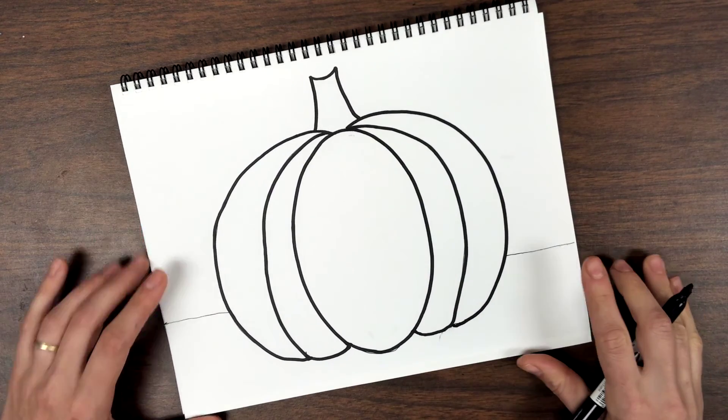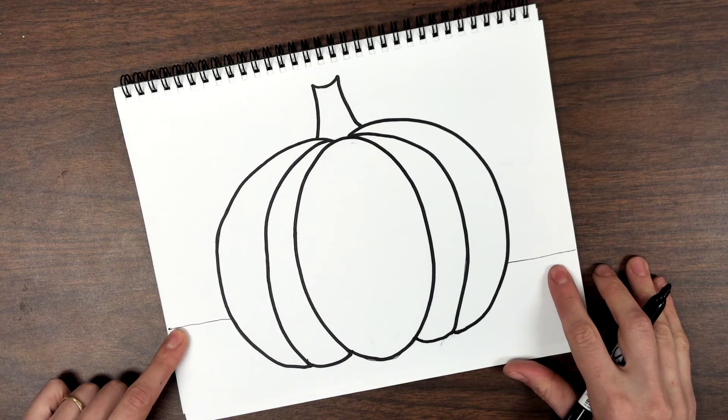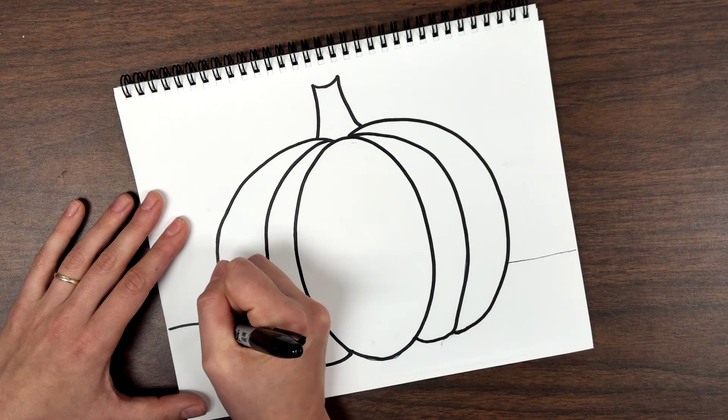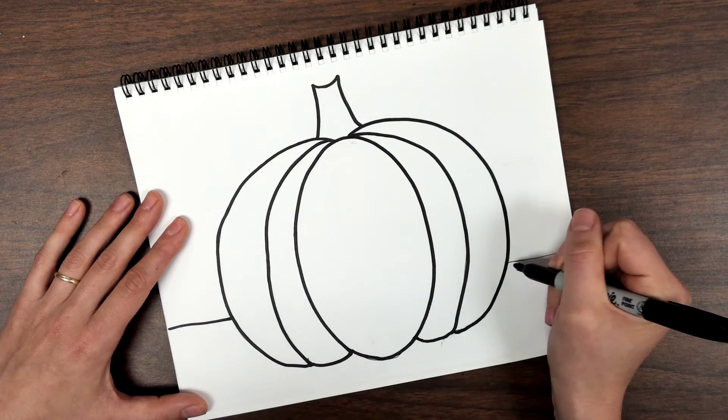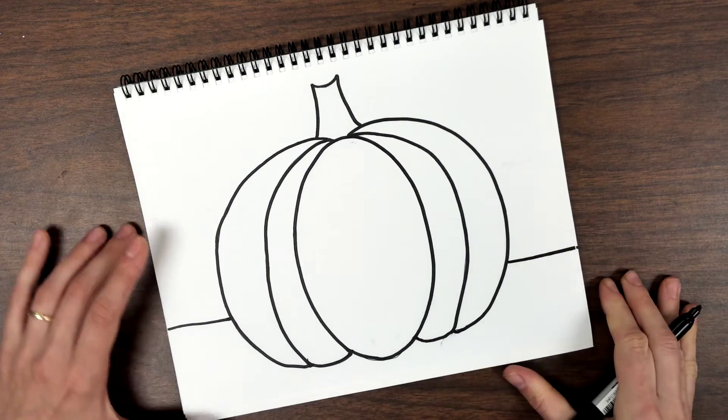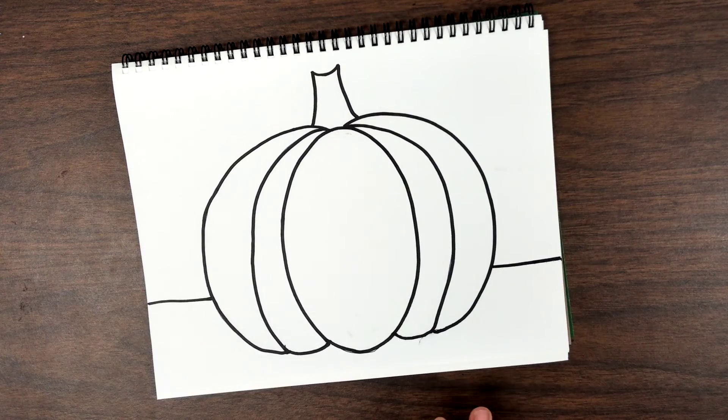After you get your pumpkin done, make sure to get your horizon line as well. So starting on one end. That is step three.